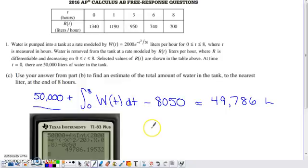The only thing you're going to have to make sure you do is recognize the calculator's in play. Use the technology to evaluate this integral right here. I just evaluated everything on my calculator screenshot right here. I had my 50,000 plus my numerical value for the integral of W(t) from zero to eight, and then minus my 8,050.